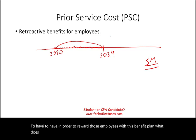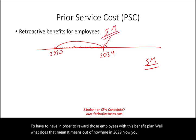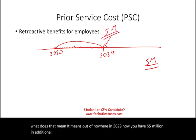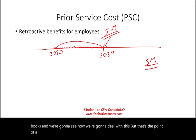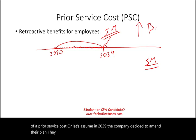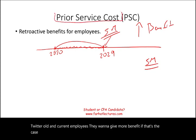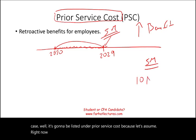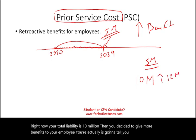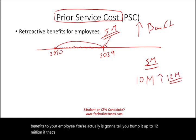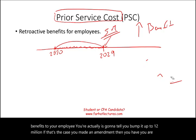What does that mean? It means out of nowhere in 2029 you have five million dollars in additional expenditure to put on your books. That's the point of a prior service cost. Or assume in 2029 the company decided to amend their plan to give more benefit to current employees. If your total liability is ten million and you give more benefits, your actuary might bump it up to twelve million. You've made an amendment rewarding employees for prior service — that's a prior service cost.